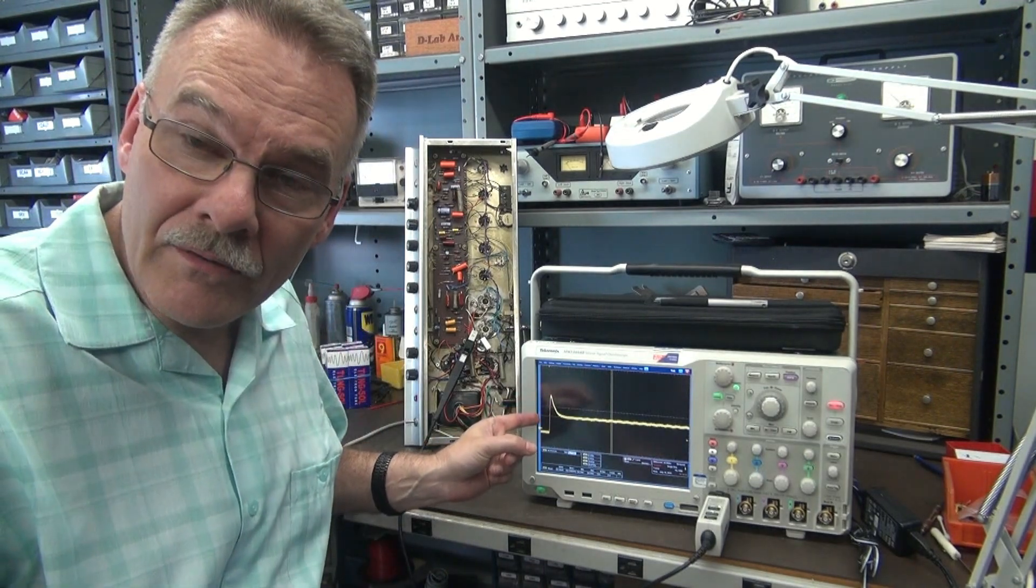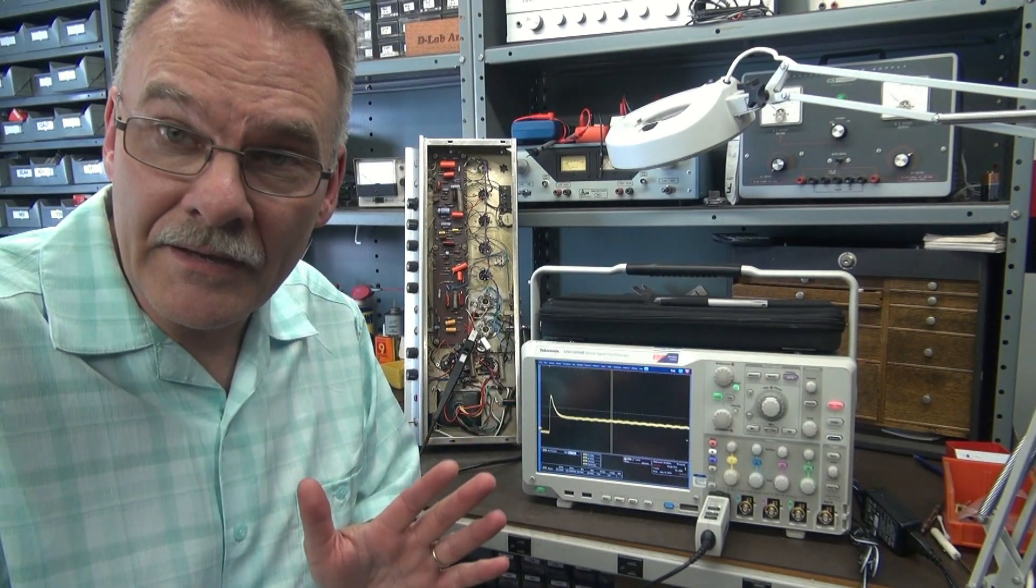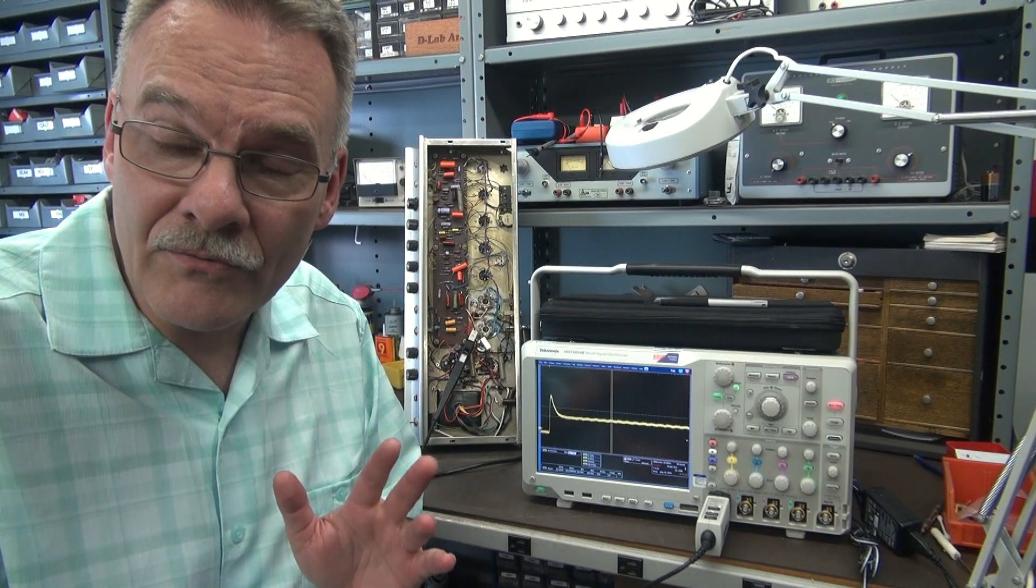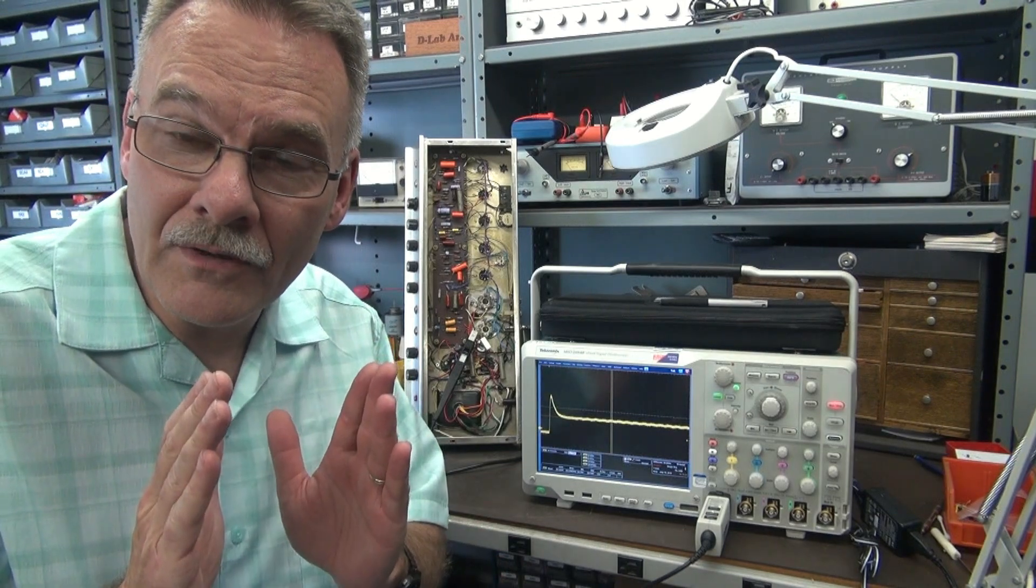On the Marshall amplifier, you get a spike either way with those solid state rectifiers because you lose that cushion of the tube rectifier.